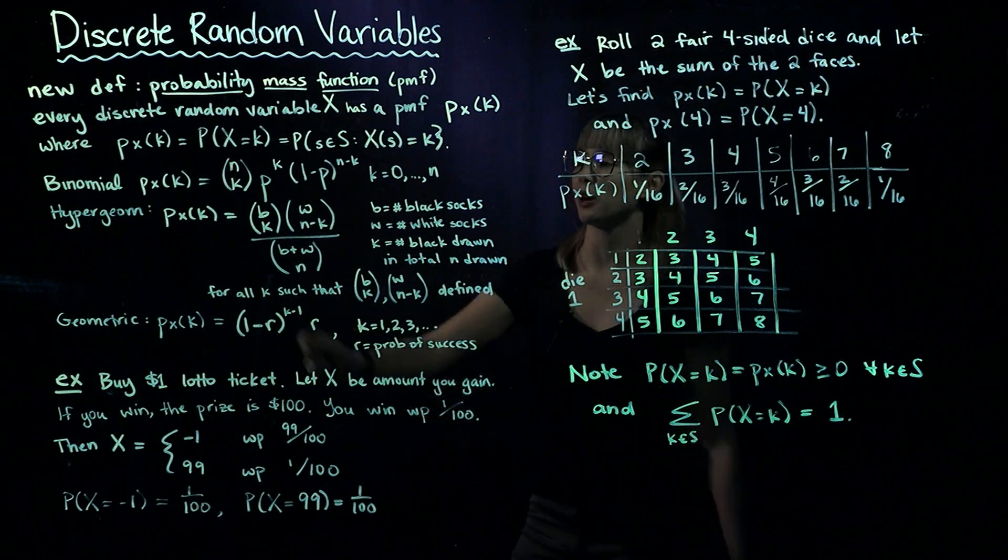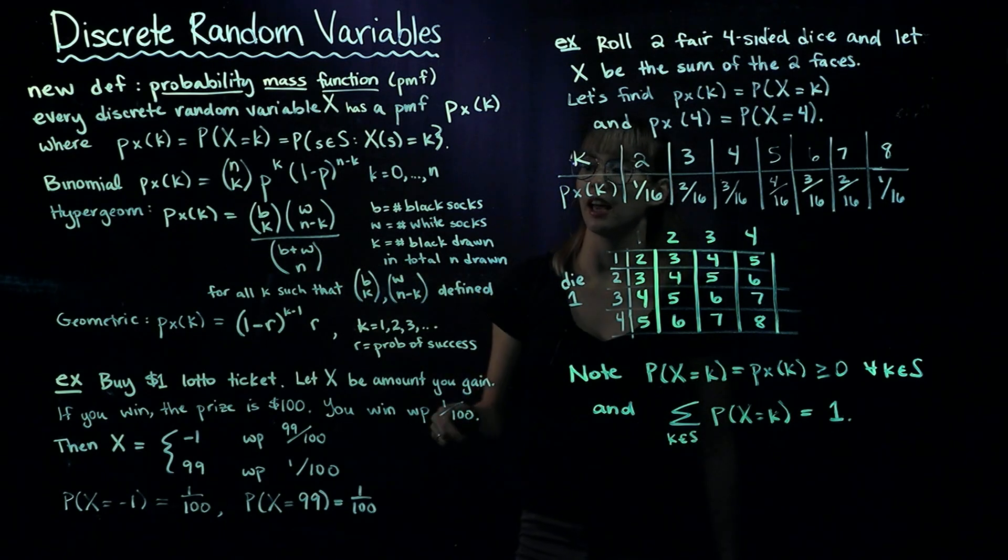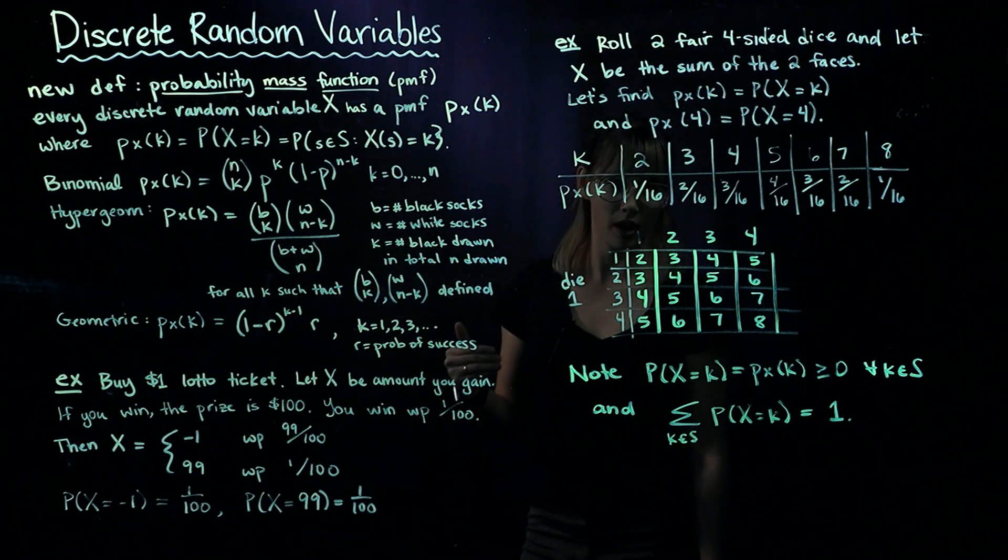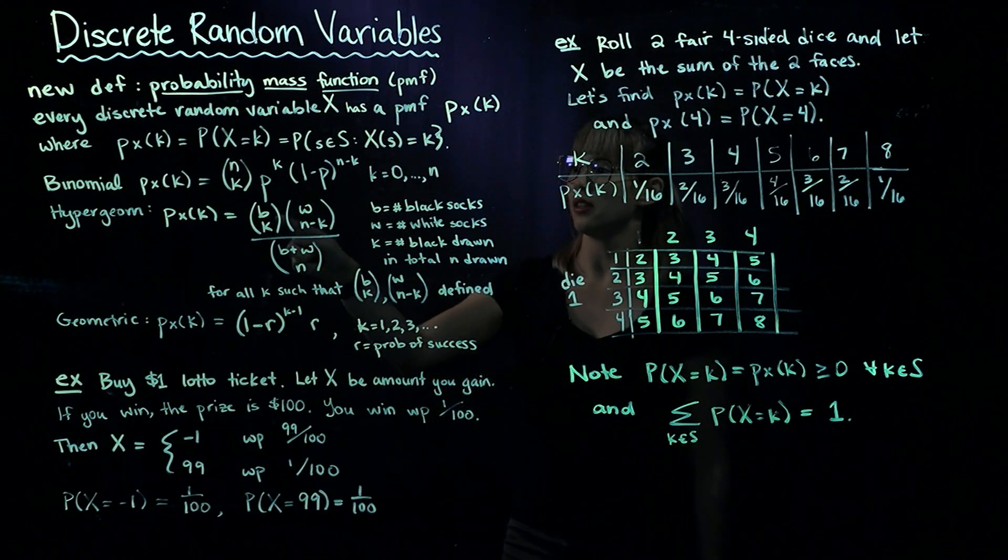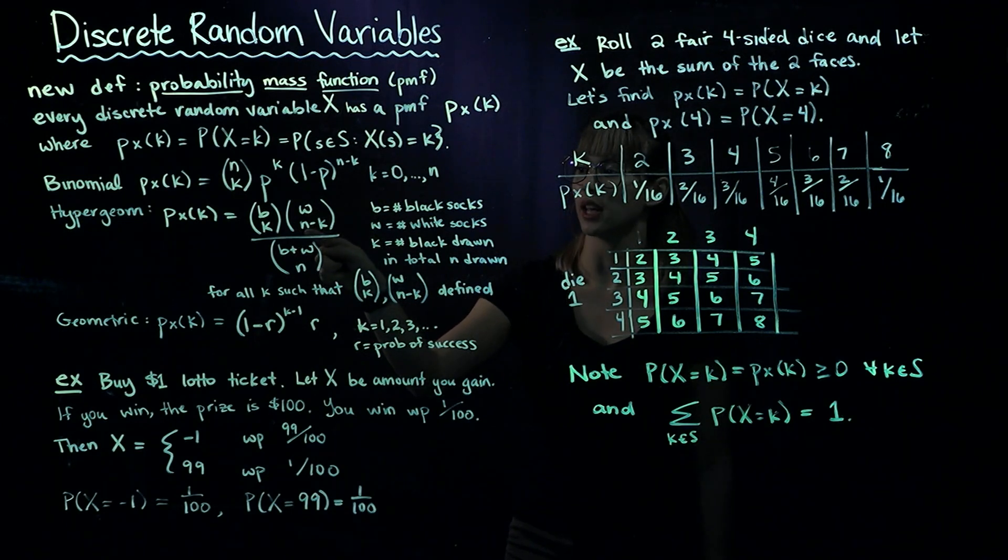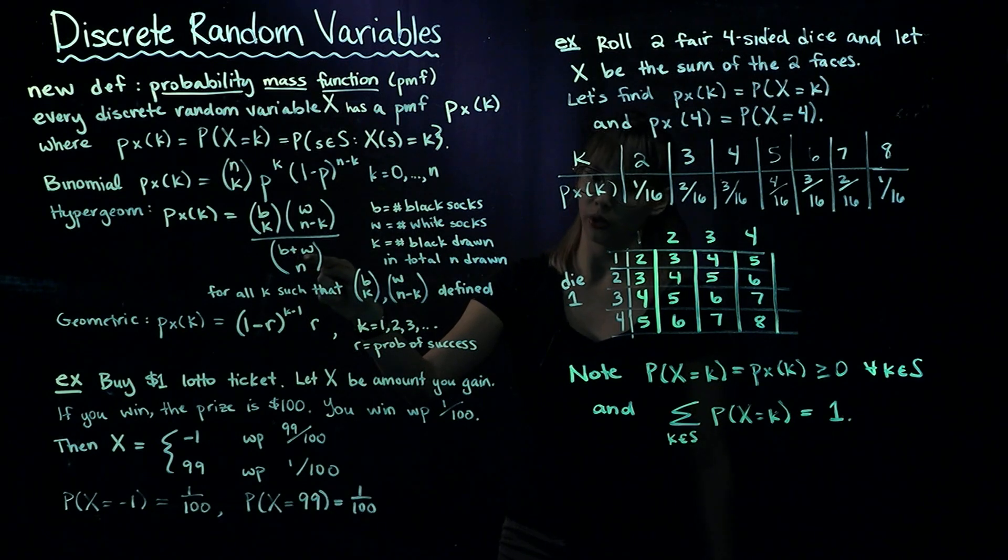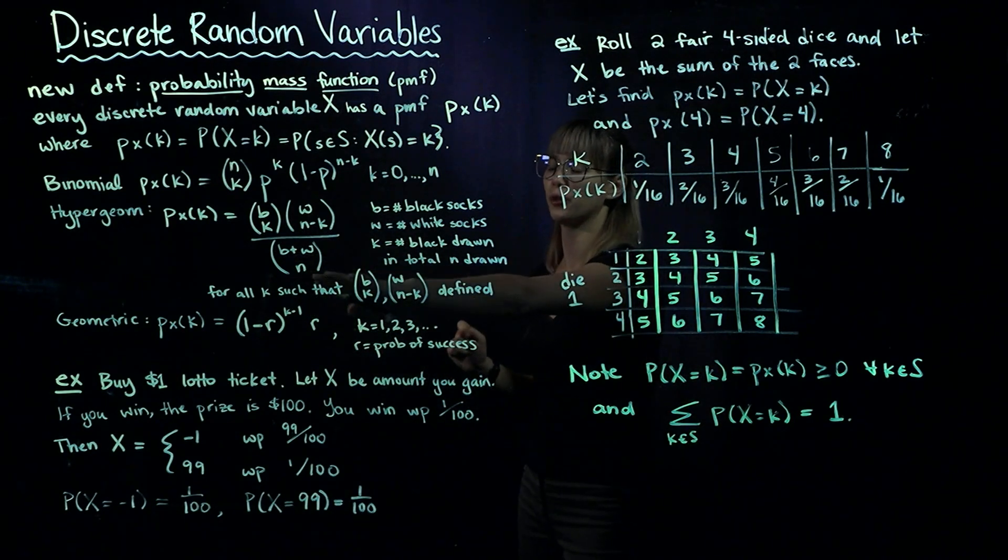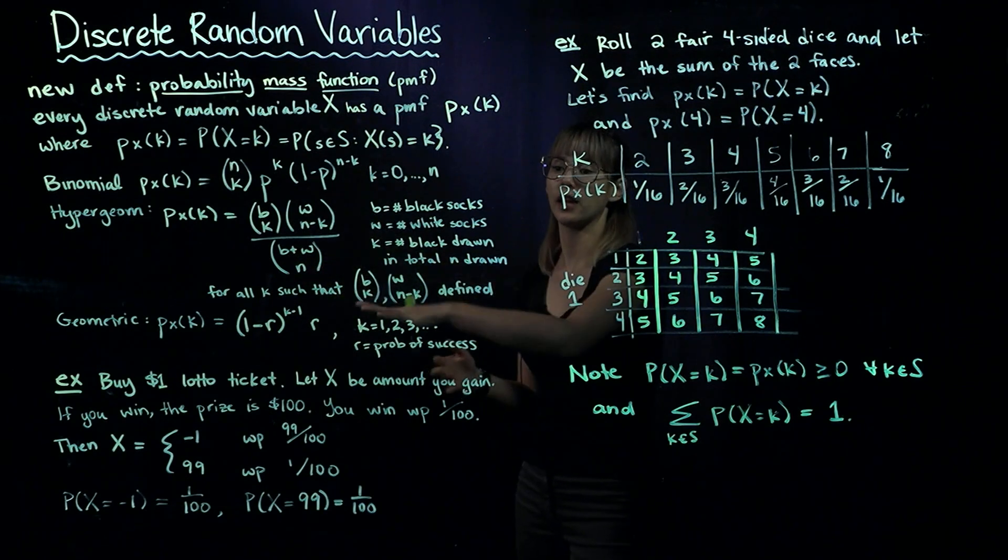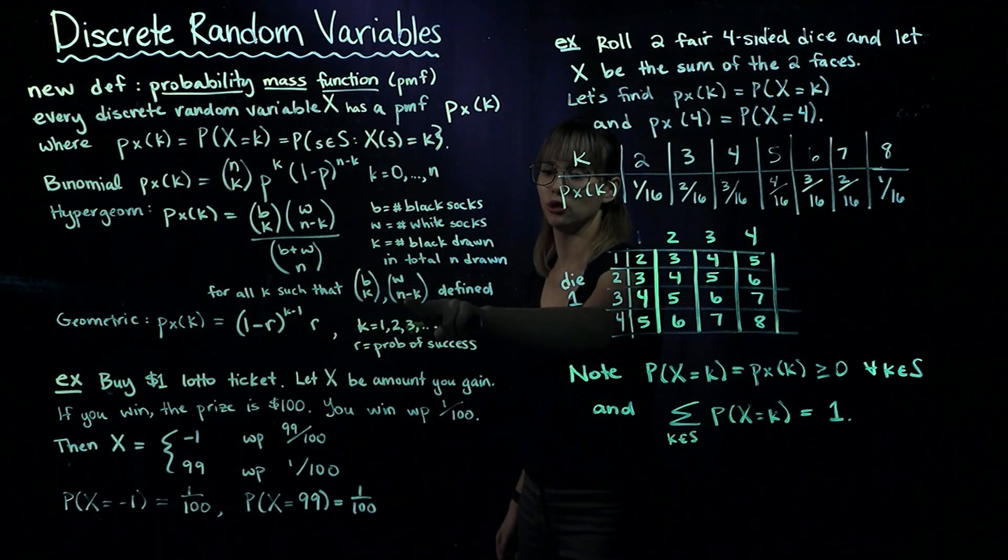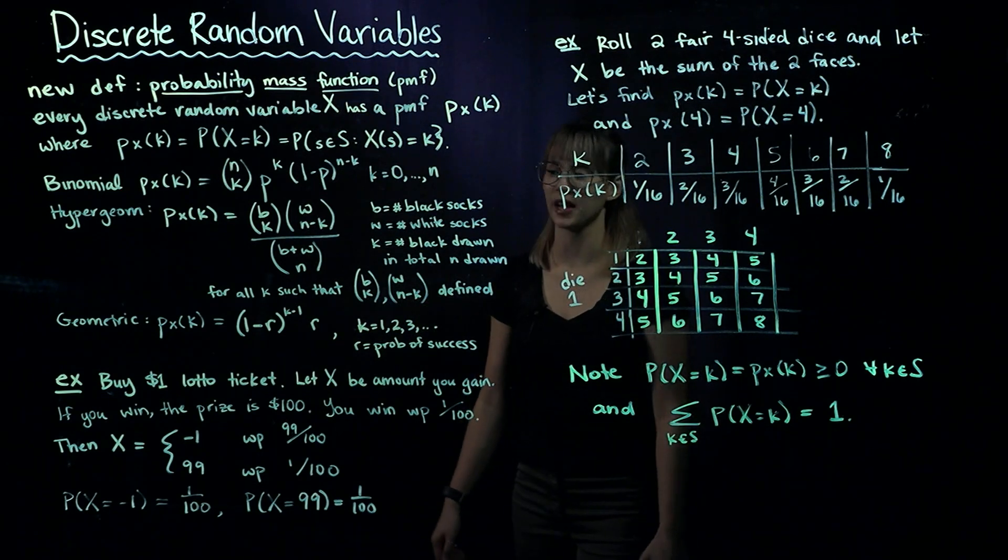K is the number of black socks drawn. The probability that X equals K, or that we draw K black socks, equals B choose K times W choose N minus K, divided by B plus W choose N. This holds for all K such that B choose K and W choose N minus K are defined.